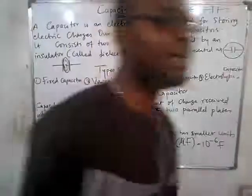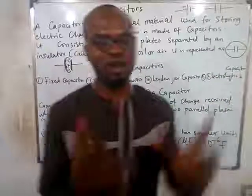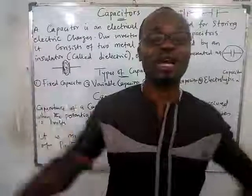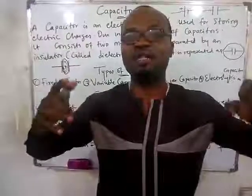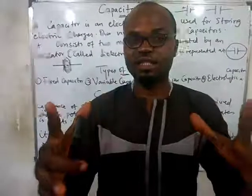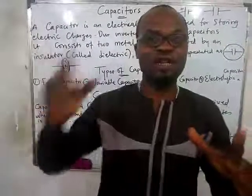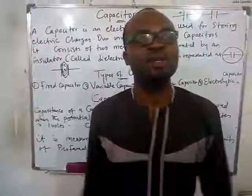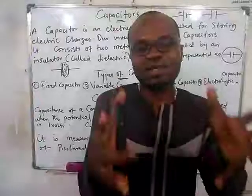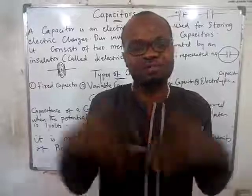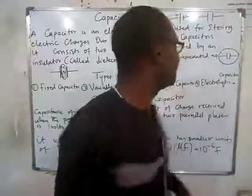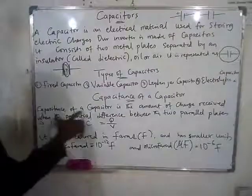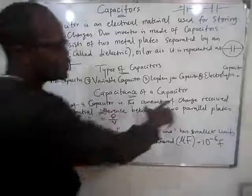Now we talk about the capacitance of a capacitor — the ability of a capacitor to store charges. A capacitor with very high capacitance will store more charge, so when the electricity goes out it can supply much more light. If the capacitor has very small capacitance, the power supplied is lesser.